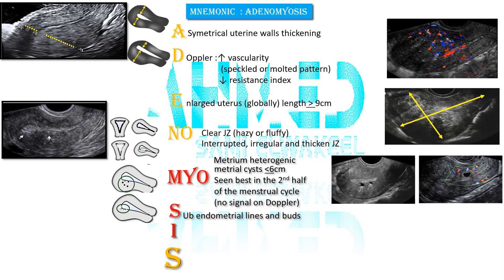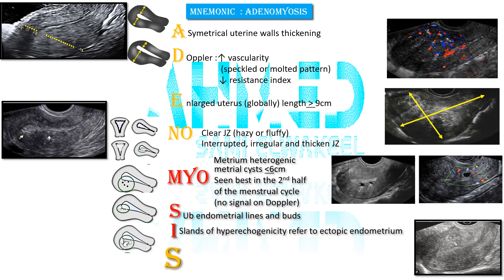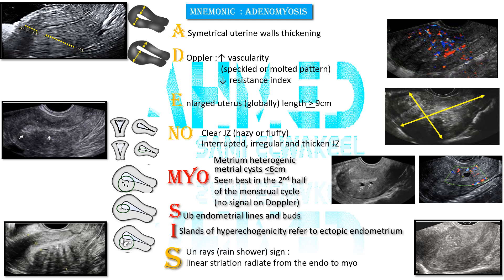S stands for sub-endometrial lines and buds. I stands for islands of heterogeneity, referring to ectopic endometrium. The next S stands for sun rays or rain shower sign, which refers to linear striations radiating from the endometrium into the myometrium.